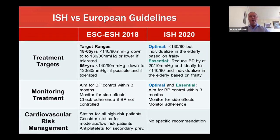Both guidelines emphasize the importance of monitoring therapy, following up patients, and trying to ensure blood pressure is controlled quickly within three months, monitoring the side effects of therapy — particularly with these lower targets — and checking adherence to ensure blood pressure is controlled, particularly in patients where blood pressure control is not optimal. This is the same for both guidelines.